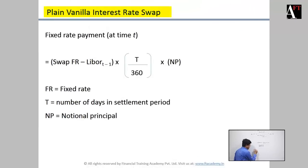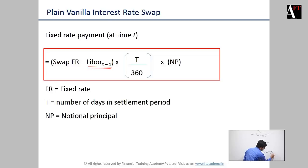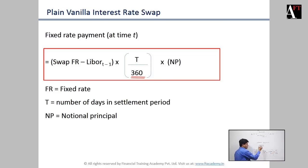In a plain vanilla interest rate swap, the fixed rate payment party's net payment is calculated as: the fixed swap rate minus the LIBOR of the previous period, multiplied by the time of the previous period, divided by 360 — so if semi-annual it will be 180 days, if quarterly it is 90 days — multiplied by the notional principal.